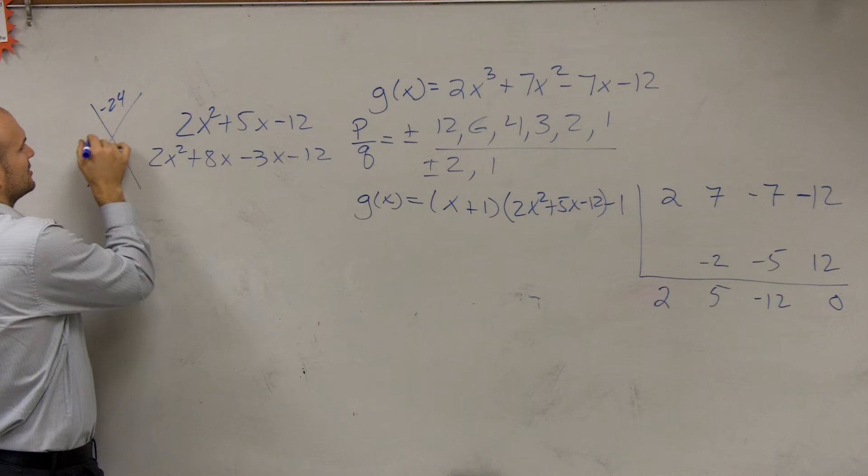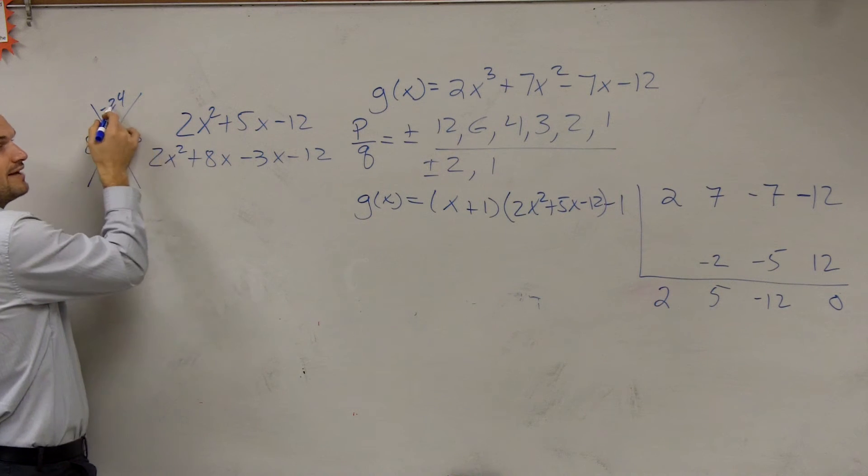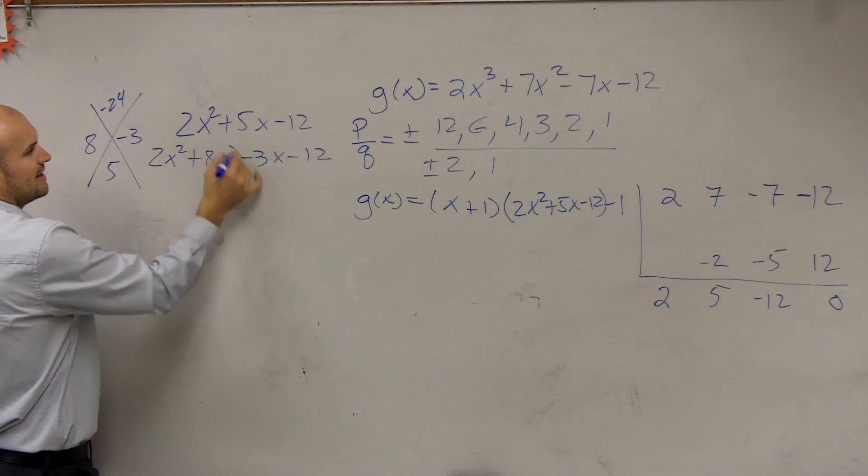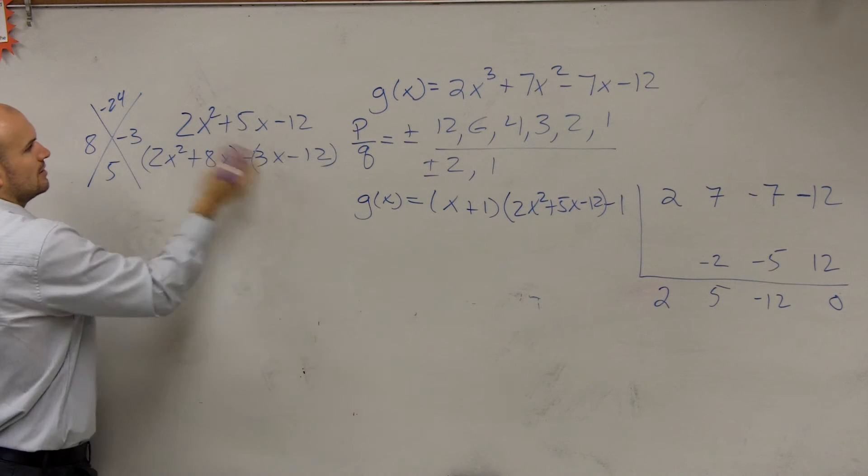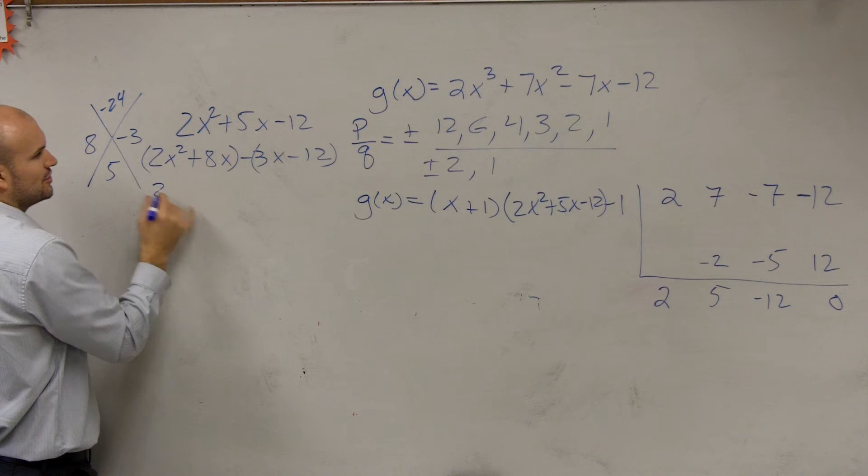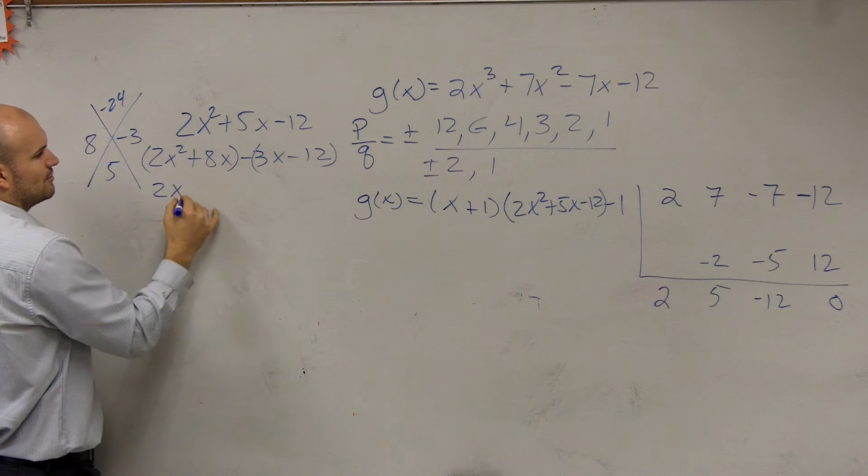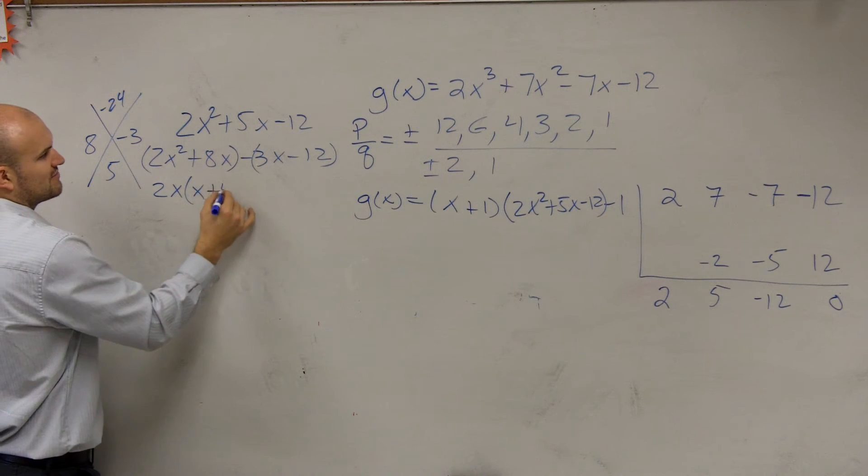Those two numbers, so you could say 8 and negative 3. Multiply to give you negative 24, add to give you 5. Then, we factor now by grouping. So now what we can do is factor out a 2, 2x. That's going to be with an x plus 4.